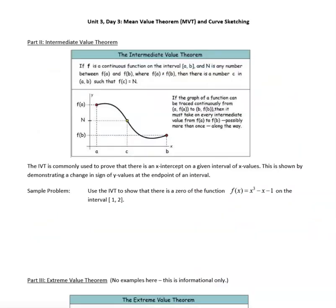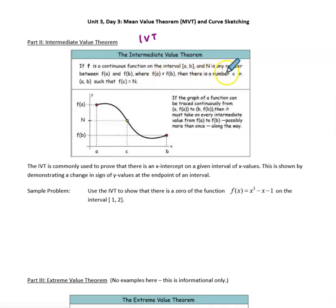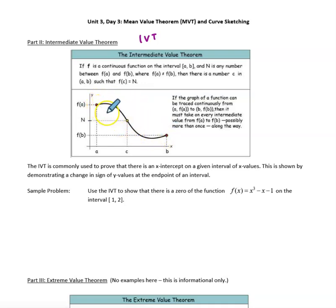The next theorem is the IVT, the intermediate value theorem. You may have seen this in Algebra 2 or Precalculus. It basically guarantees that if you have a continuous function — no differentiability required — on a closed interval where the endpoint y values are not the same, then there must be some x value c on the open interval such that f(c) equals any y value n between the beginning and ending y values.